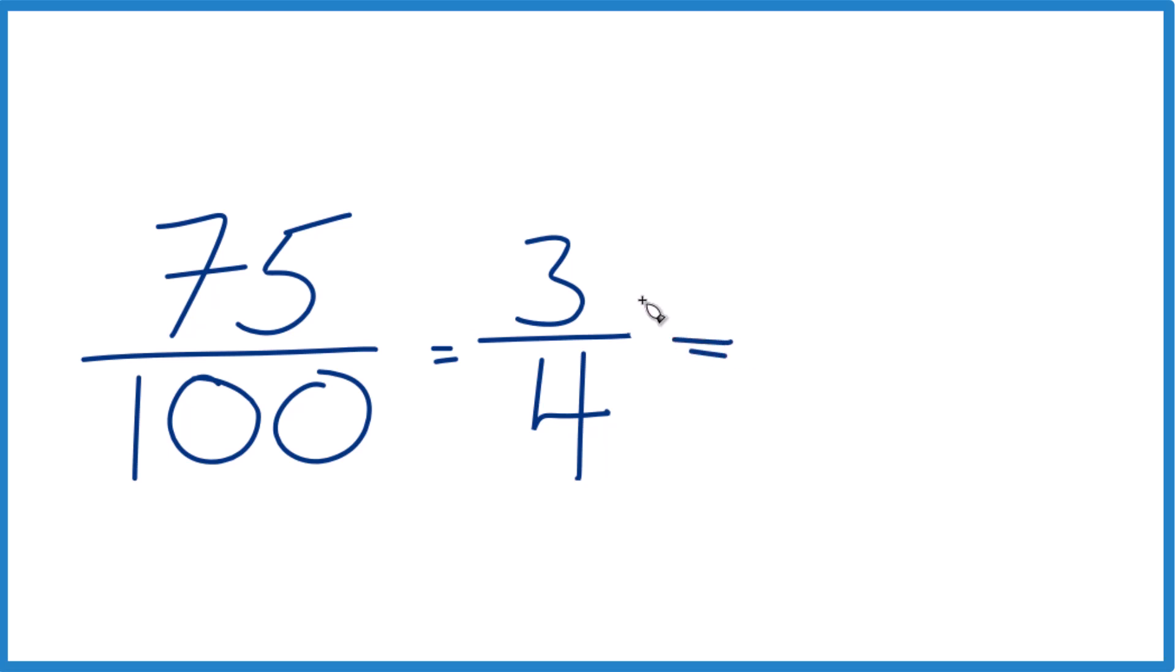If we want a decimal, we could divide 3 by 4. But why don't we do this? Let's divide 75 by 100 because we can move our decimal place here. That's just 1. And then 1, 2. Here is 0.75 over 1, which is just 0.75. Let's call it 0.75.